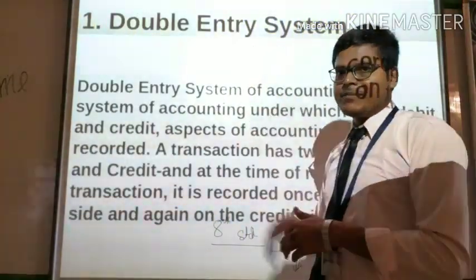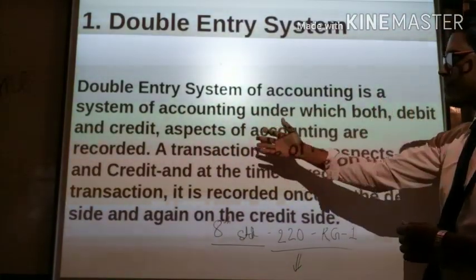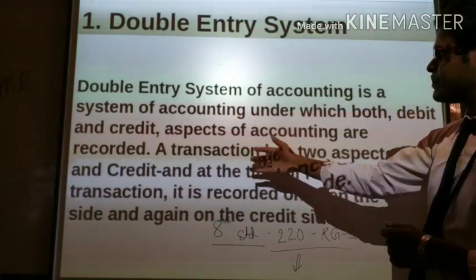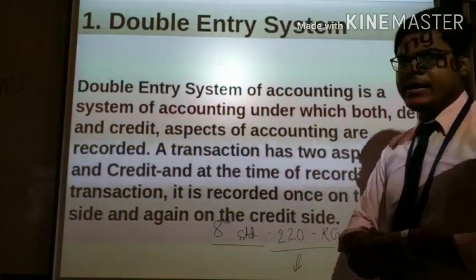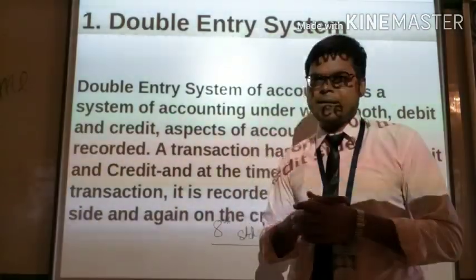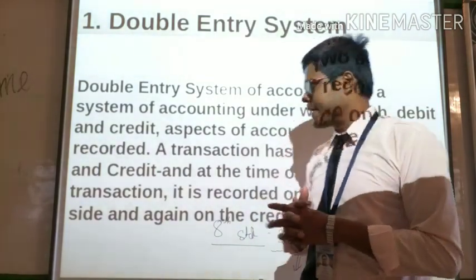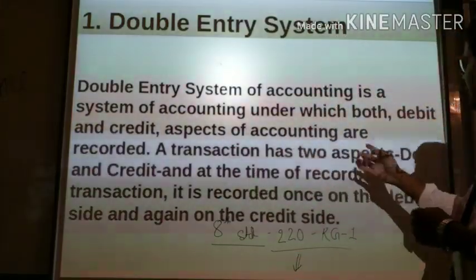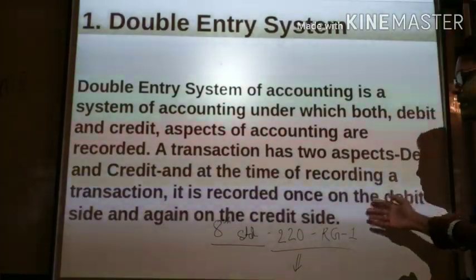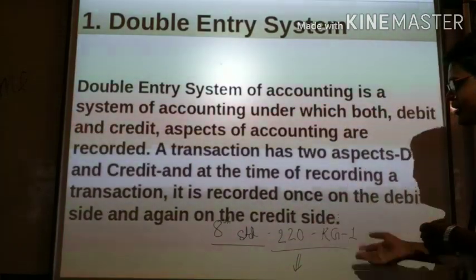Double entry system. What is this double entry system? The double entry system of accounting is a system under which both debit and credit aspects of a transaction are recorded. A transaction has two aspects — debit and credit — and at the time of recording a transaction, it is recorded once on the debit side and again on the credit side.